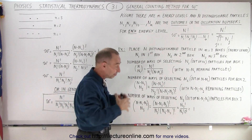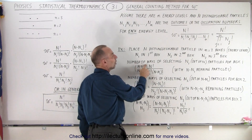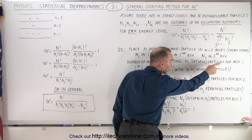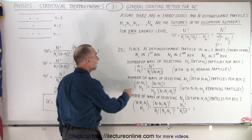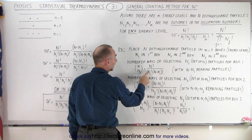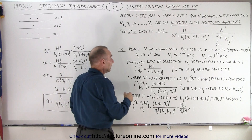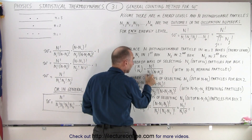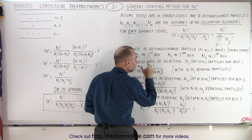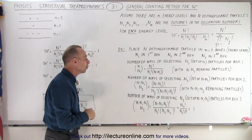We're not told how many we have, so it doesn't have to be six — it could be any number. What are the number of ways of selecting the number of particles out of the total number for box one? We take N factorial, the total number of particles, divided by n1 factorial — however many there are in n1 — times the remaining number of particles, which is N minus n1, factorial. So N minus n1 is the remaining number of particles.